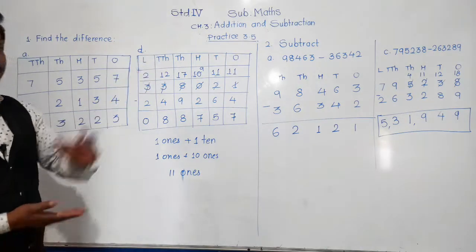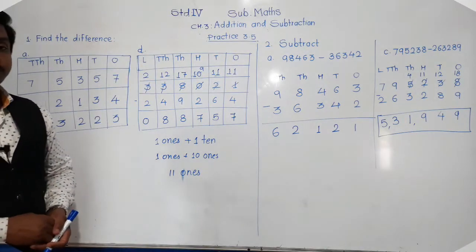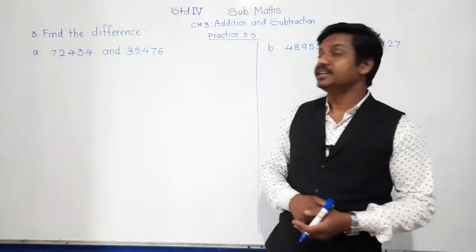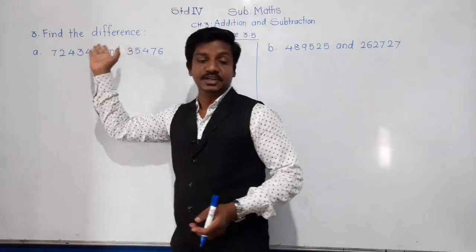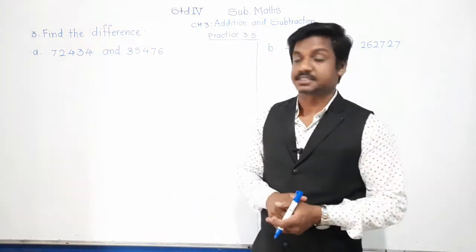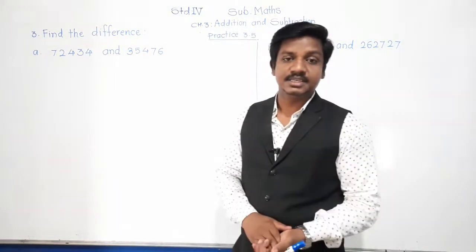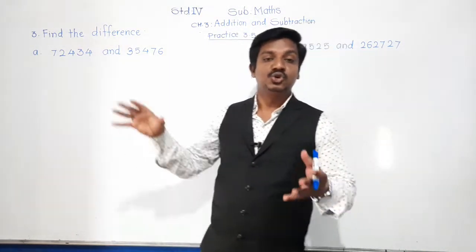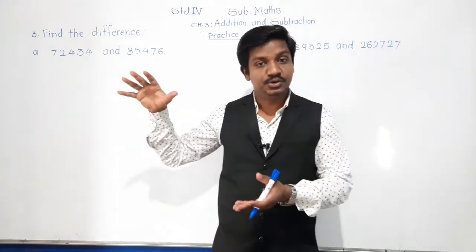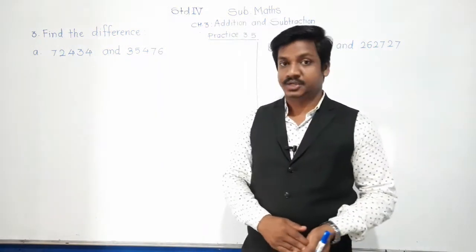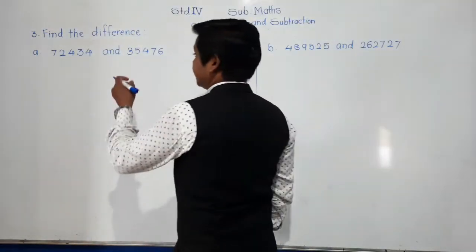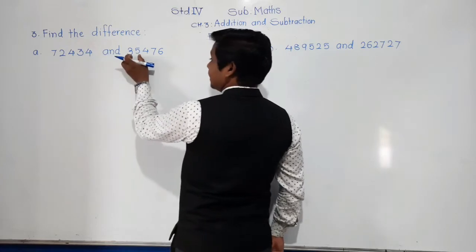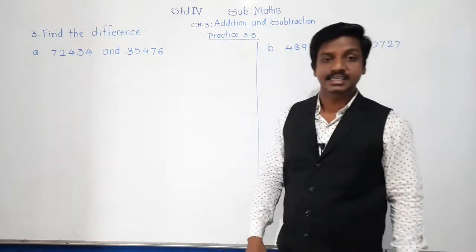Pause this video and write this in your notebook. Let us move towards the next question, question number 3: find the difference — and you know that difference means subtraction. So let us subtract 72,434 and 35,476. These are the two numbers whose difference we have to find. First write the name of places — these are five-digit numbers, so write five places: ones, tens, hundred, thousand, and ten-thousand.